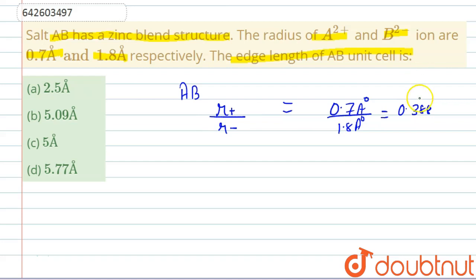We know that this ratio lies between 0.225 and 0.414, because 0.388 is in between these two values. This tells us that A⁺, or the cation, occupies the tetrahedral voids.